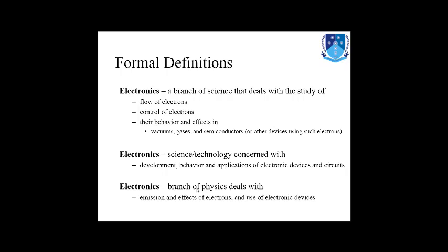Formal definitions: electronics can be defined in three different ways. First, electronics is a branch of science that deals with the study of electrons, the flow of electrons, the control of electrons, and the behavior and effects of electrons in vacuums, gases, and semiconductor materials.